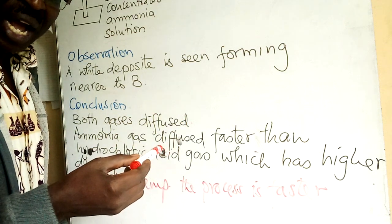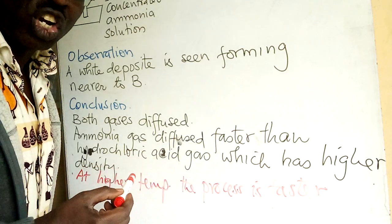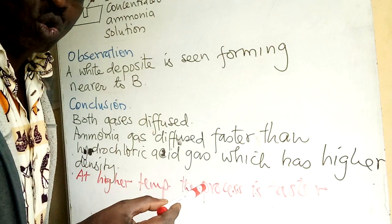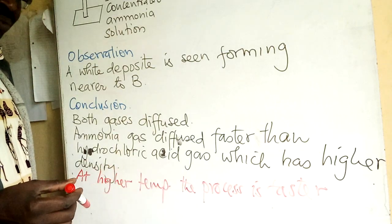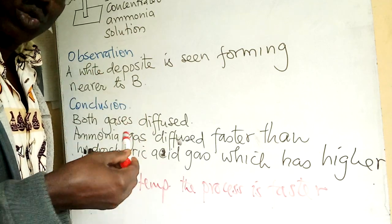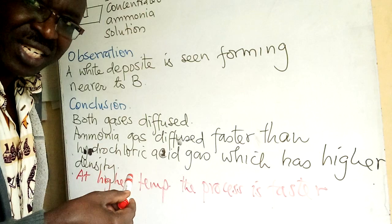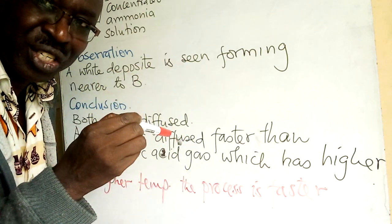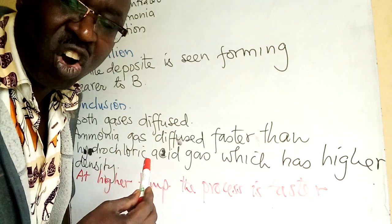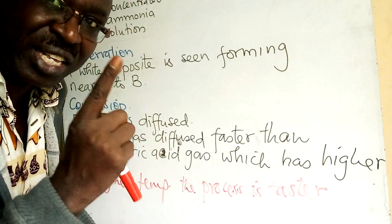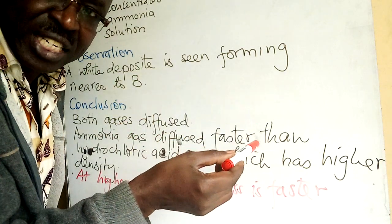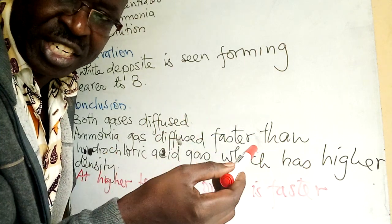A vehicle with high speed covers a longer distance within the same time compared to a slow vehicle. From that difference in the distance covered, we are able to conclude that ammonia gas has a higher speed — in other words, it has a higher rate of diffusion. A gas that is more massive or has a higher density moves more slowly.